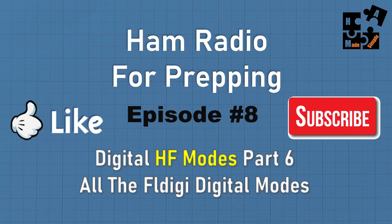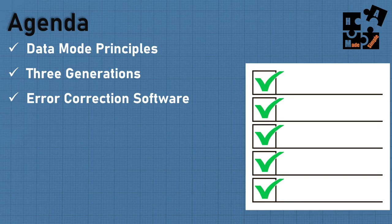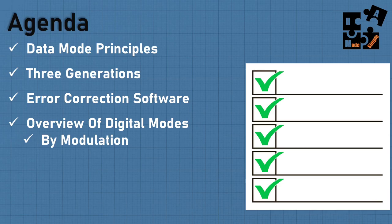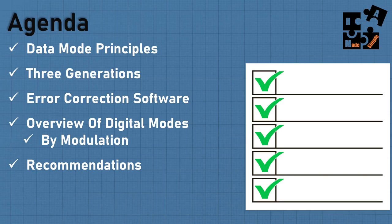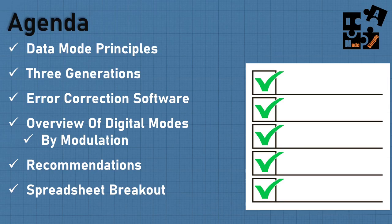Today's agenda: data mode principles — really important, because once you start understanding this it'll make sense why there are so many digital modes. I'm going to go through the three generations, talk about error correction software, give an overview of all the digital modes, break them down by modulation, and give recommendations from both a prepper standpoint and for just having fun. Make sure you stay to the end. Finally, I'll give you the spreadsheet breakout so you can see all the variable factors, and a summary of the most important things to remember after watching this video.